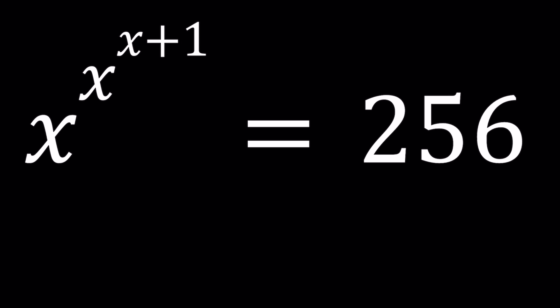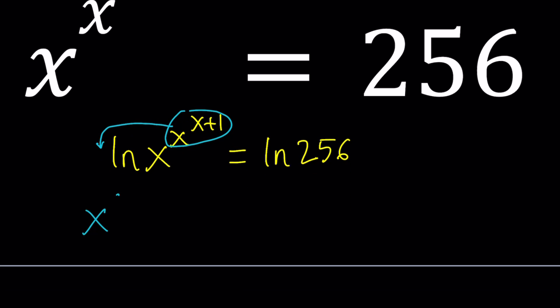I'm going to go ahead and log both sides. I'll use the natural log for this. So, ln x to the power x to the power x plus 1 equals ln 256. And then, the rule says we can bring down the exponent. This we can kind of bring to the front, and that becomes x to the power x plus 1 times ln x equals ln 256.